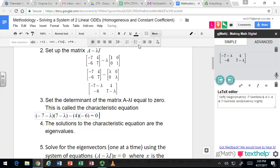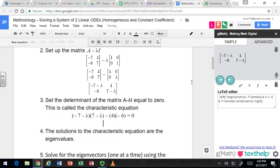For a 2×2 matrix, finding the determinant is a matter of finding the product of the diagonal terms and subtracting the product of the off-diagonal terms. So we would have (-7 - λ)(7 - λ) - 4(-6). We're setting it equal to 0. This is the characteristic equation for this matrix.